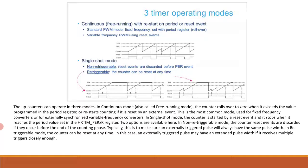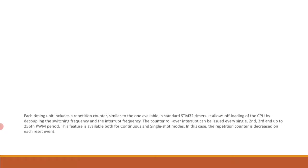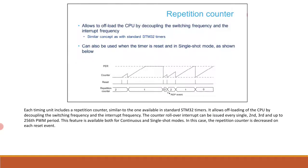Each timing unit includes a repetition counter, similar to the one available in STM32 timers. It allows offloading of the CPU by decoupling the switching frequency and interrupt frequency. Counter rollover interrupts can be issued every single, second, third, and up to 256th PWM period. This feature is available for both continuous and single shot modes; in single shot mode, the repetition counter is decremented on each reset event.